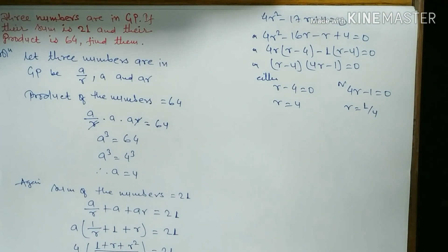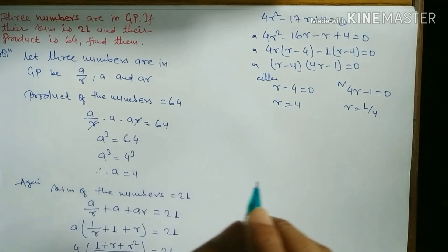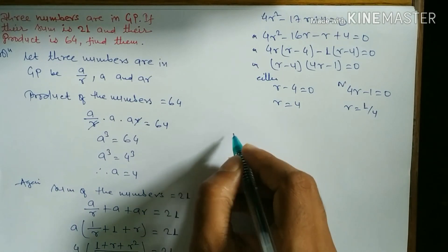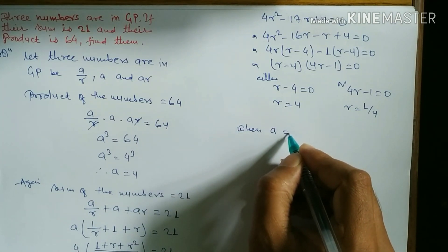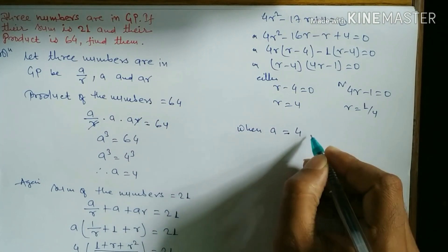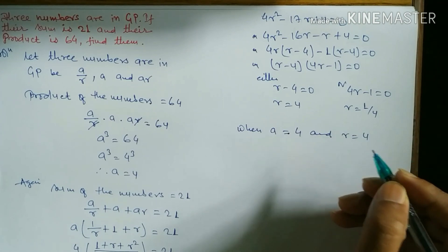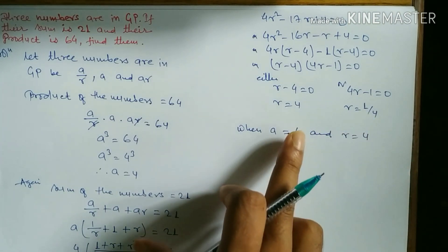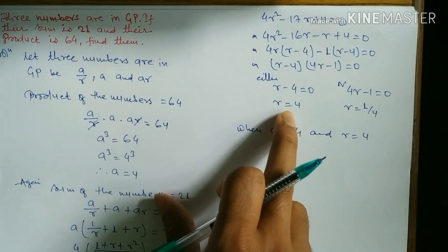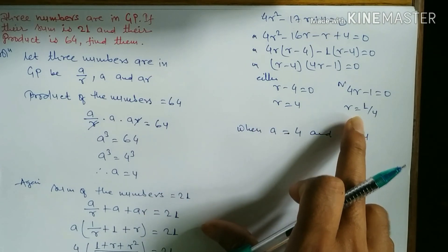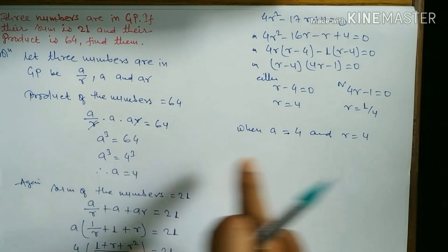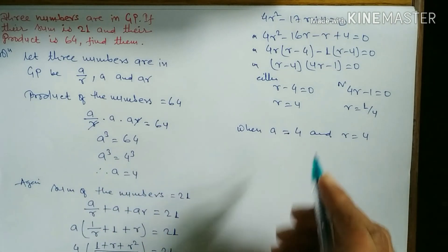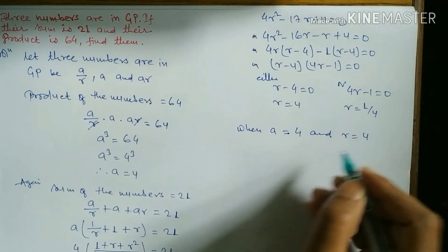Now we find the numbers. When a = 4 and r = 4, we use the representation a/r, a, ar. We take r = 4 first, then r = 1/4 separately.